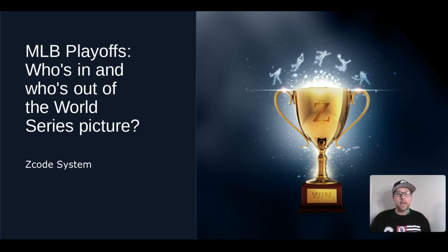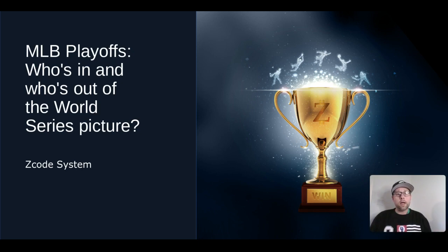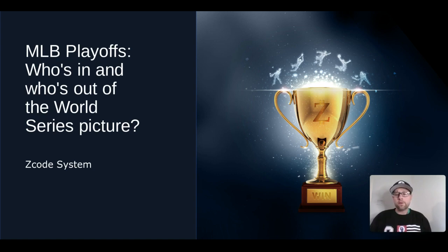We are talking about the boys of summer, who are now going into the autumn as we get ready for the Fall Classic. We know some of the teams already in the playoffs: we've got the Tampa Bay Rays who are the number one seed in the AL, the Chicago White Sox, the Houston Astros looking like they'll be in as well, and the Yankees and Red Sox fighting for that wild card. Over in the NL, the Brewers are in, the San Francisco Giants are the number one seed, the Dodgers fighting for the wild card, the Braves looking to take the NL East, and the St. Louis Cardinals are already in.